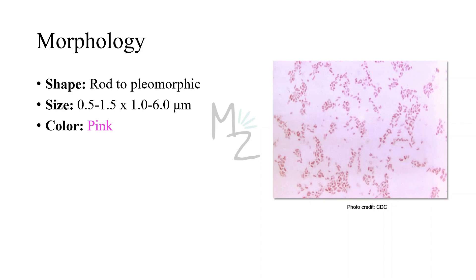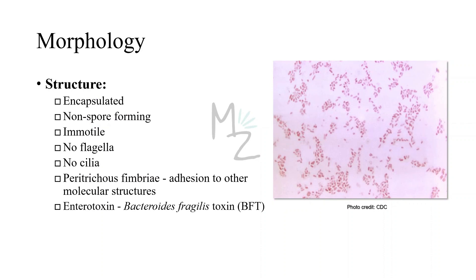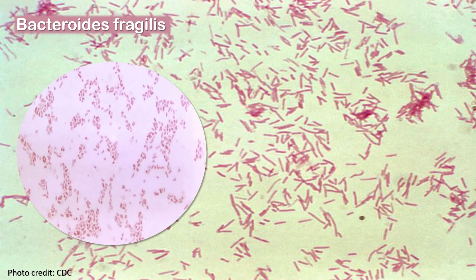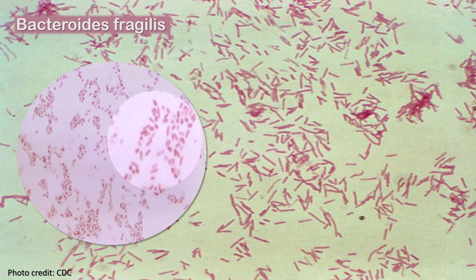Morphology: Bacteroides Fragilis is rod to pleomorphic shaped — it appears as rods, but sometimes it can appear as spheres. It varies in size from 0.5 to 1.5 micrometers by 1 to 6 micrometers. It's pink colored due to its gram-negative structure. It is an encapsulated bacterium and its capsule is a virulence factor. It does not produce spores. It is immotile as it has no flagella and no cilia, but it has peritrichous fimbriae that help in adhesion to molecular structures. It produces an endotoxin — the Bacteroides Fragilis toxin, BFT. Here you can see the rod shape and the sphere forms under the microscope.